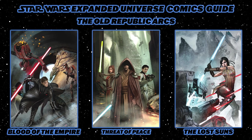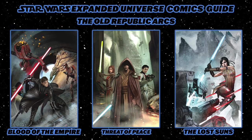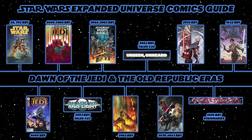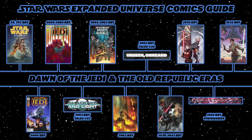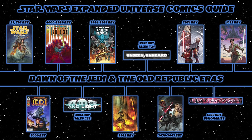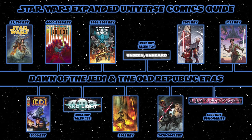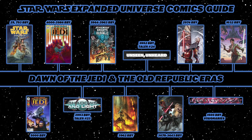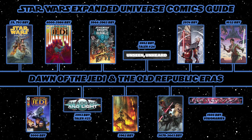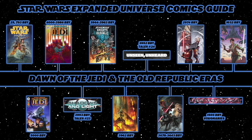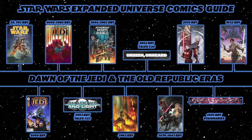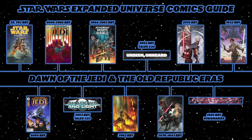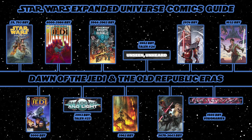Then you would read Lost Tribe of the Sith: Spiral, a five-issue miniseries by John Jackson Miller detailing the Lost Tribe of the Sith, focusing on young tribal outcast Parlon Spinner. Next, read the short story Prototypes from Star Wars Visionaries.